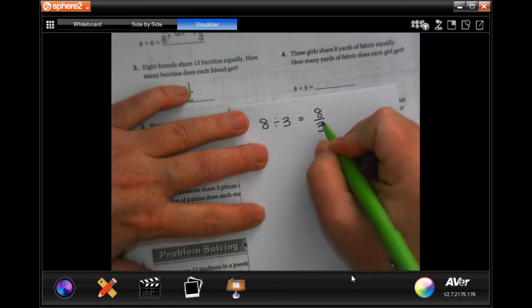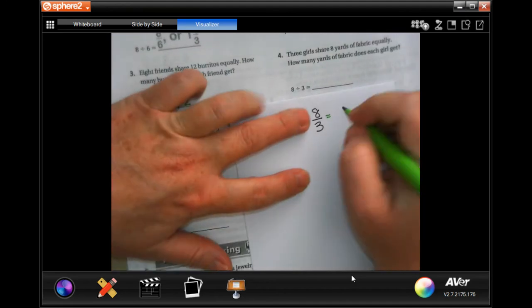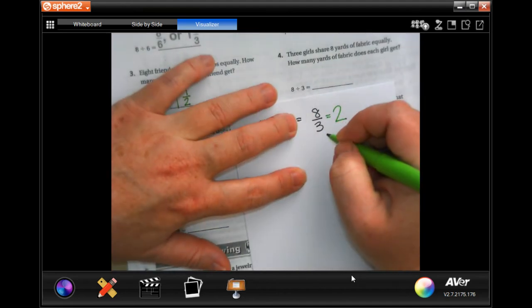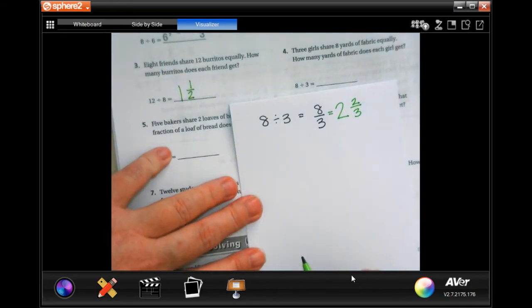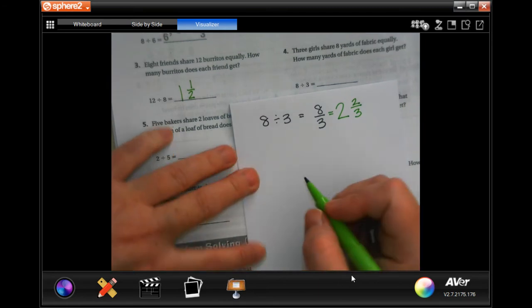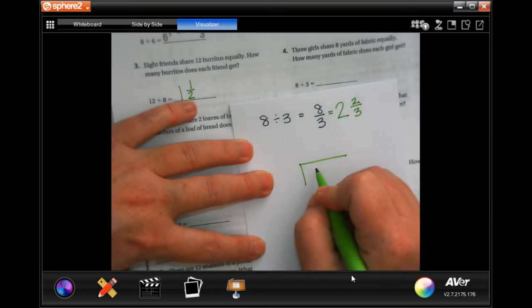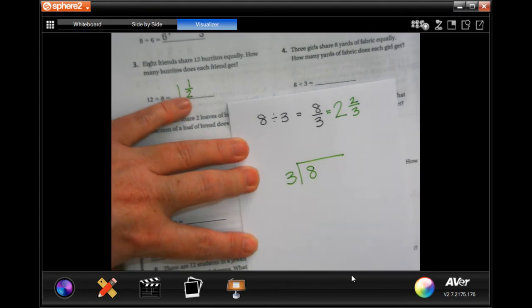So mentally I know that three goes into eight two times. Two times three is six. Eight minus six is two, and my denominator stays the same. Now all I did was to put the top number in the box.